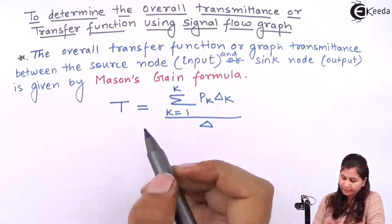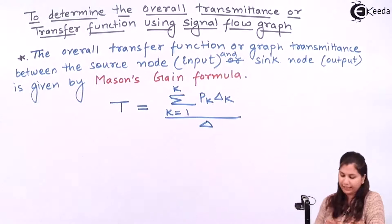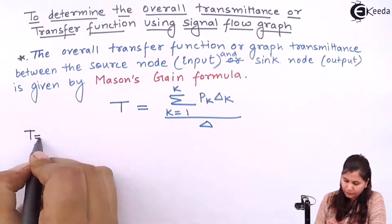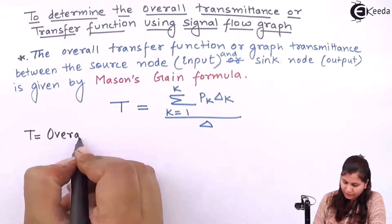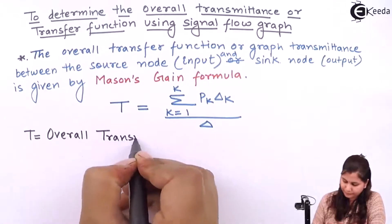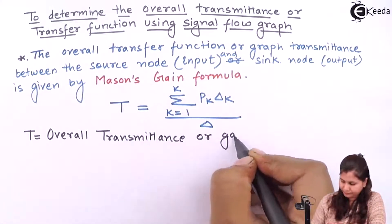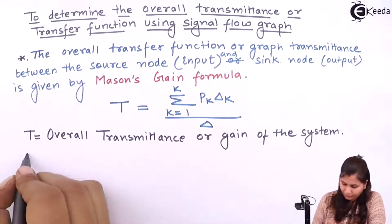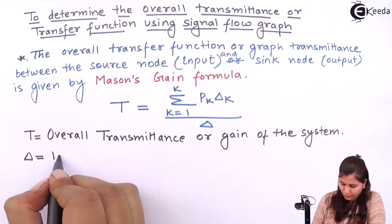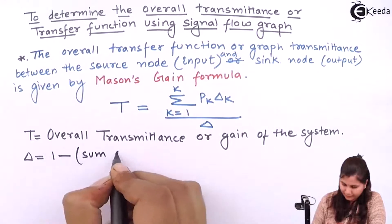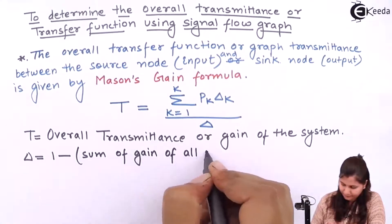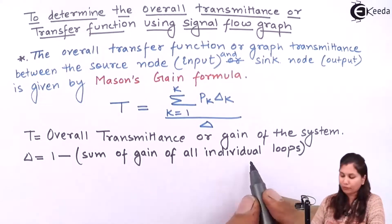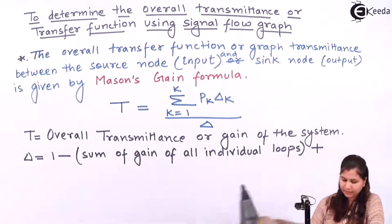Let's see what these terms are: T, p_k, and delta_k. T is the overall transmittance or gain of the system. Delta_k is equal to 1 minus the sum of gains of all individual loops, plus the sum of gains of all non-touching loop combinations.